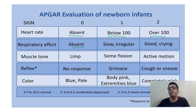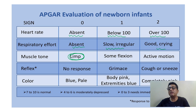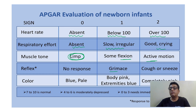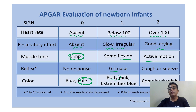Muscle tone: limp/hypotonic (as in the question) = 0, some flexion = 1, active motion = 2. Reflex: grimace (as in the question, when catheter placed) = 1, cough or sneeze = 2. Color: completely pale = 0, body pink with extremity blue (peripheral cyanosis) = 1, completely pink = 2.